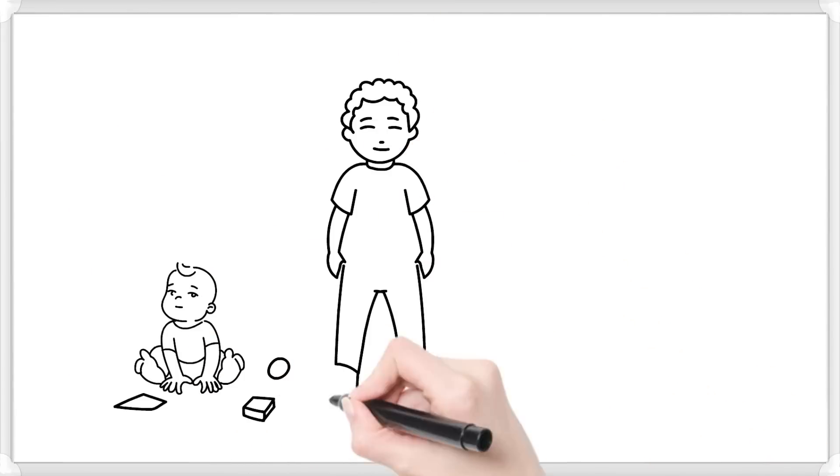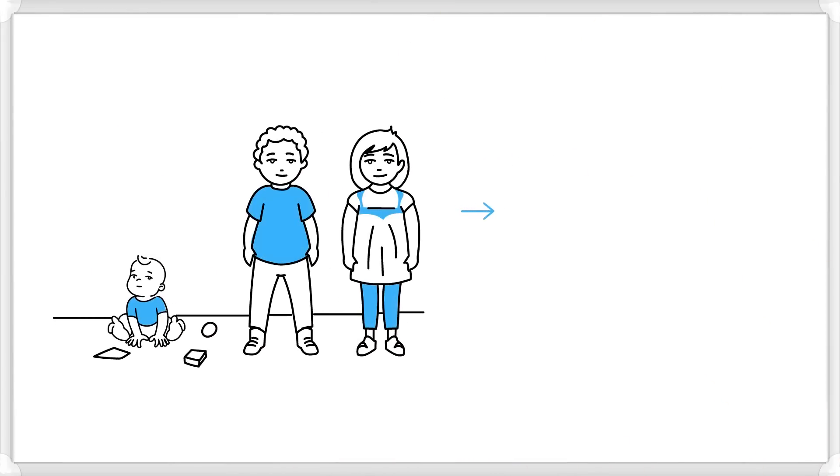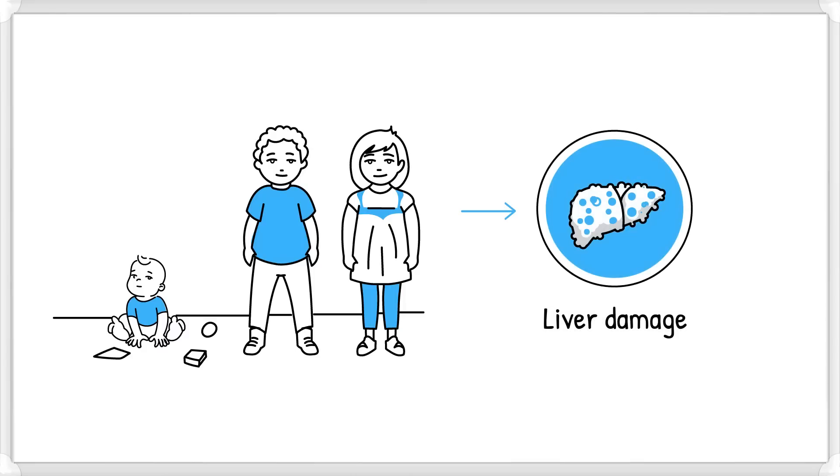In babies and children, AATD is more likely to cause liver damage than lung problems, but these children may have asthma.